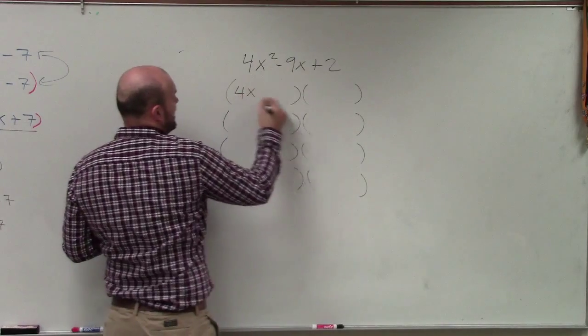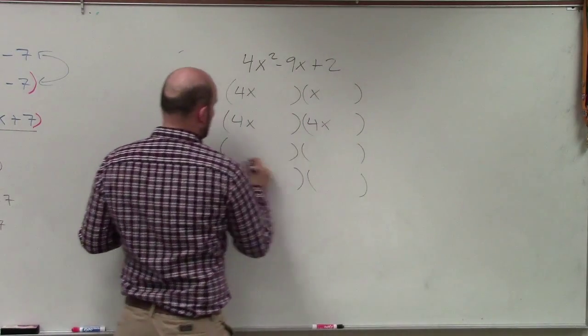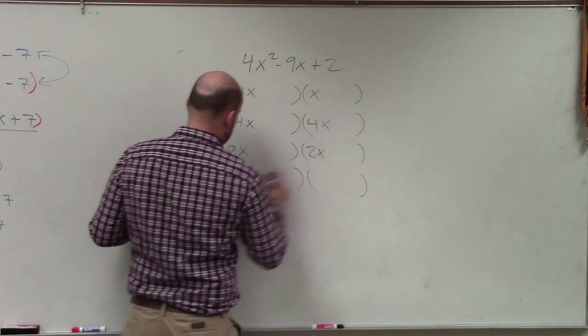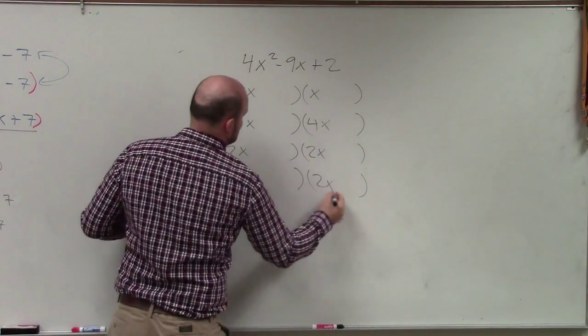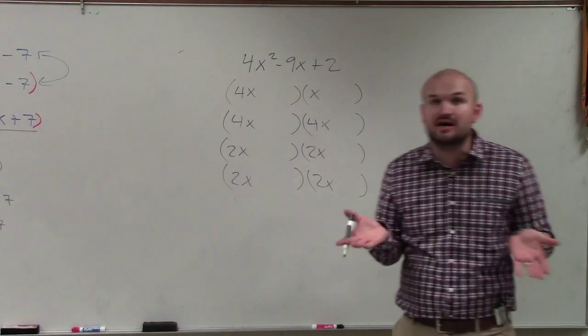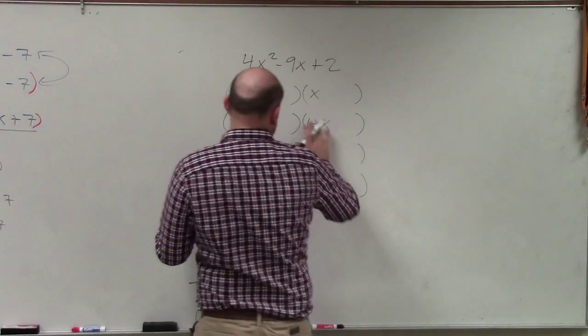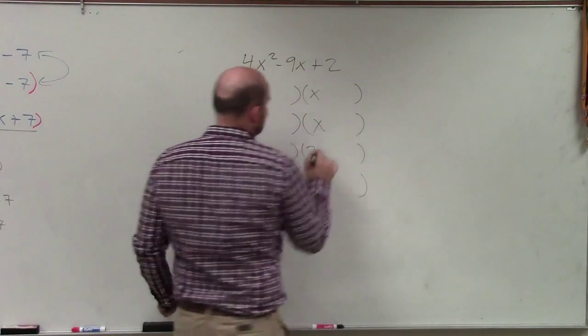So I know it could be 4x times x, right? And there's actually two examples of that. Or it could be 2x and 2x. Do you guys agree with me that all those front terms multiply to give me 4x squared? Does everybody agree? Yes. Thank you.